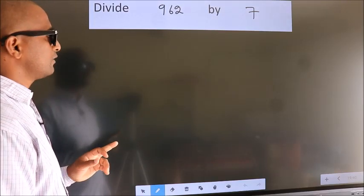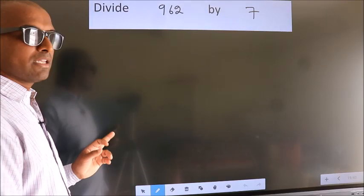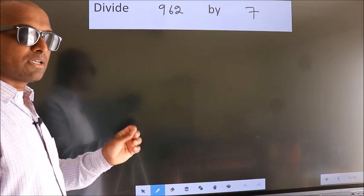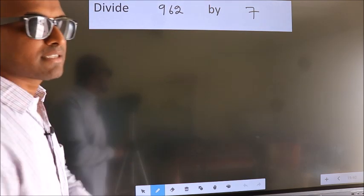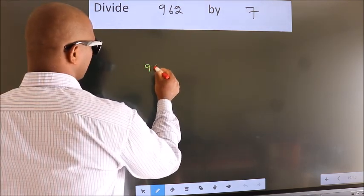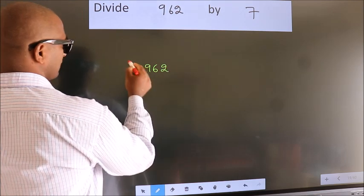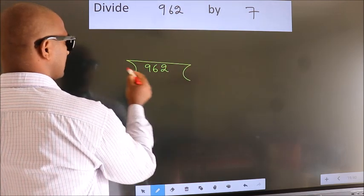Divide 962 by 7. To do this division, we should frame it in this way: 962 here, 7 here.